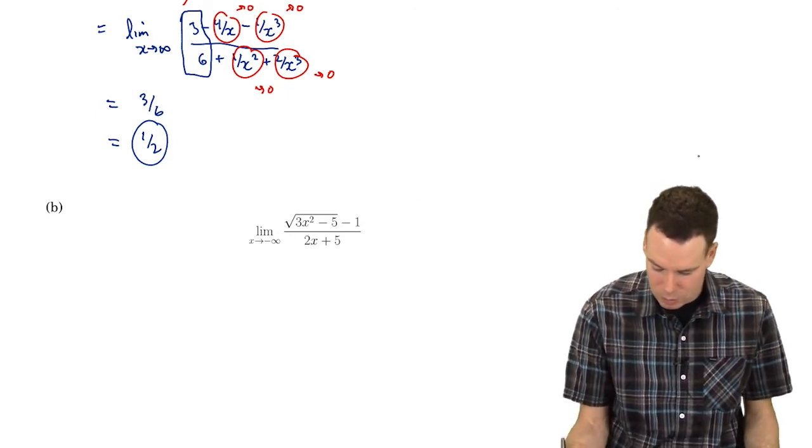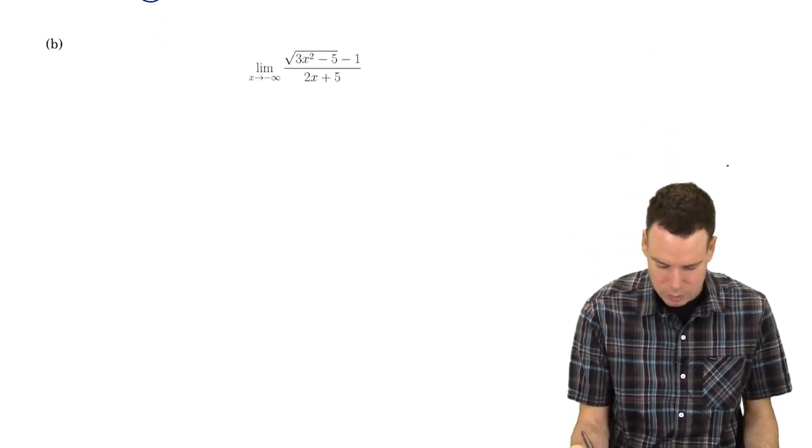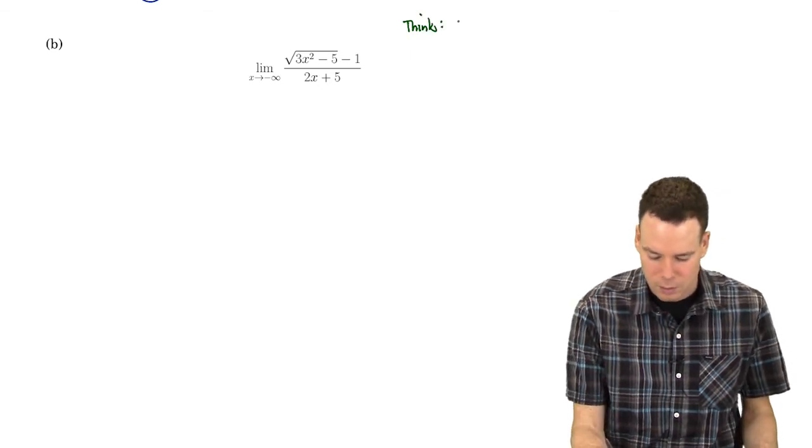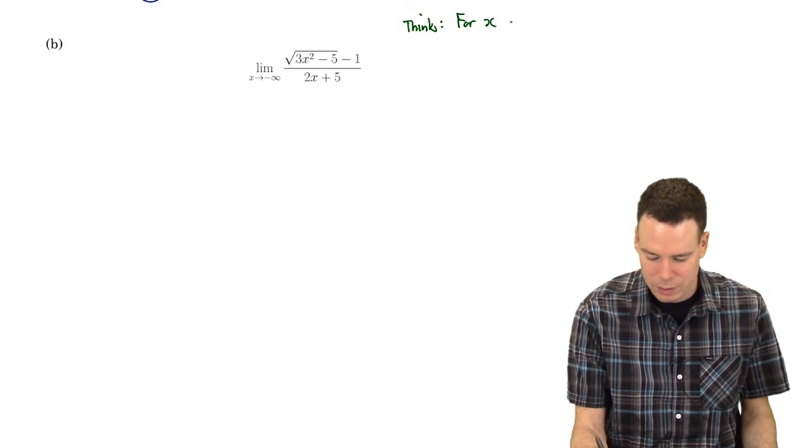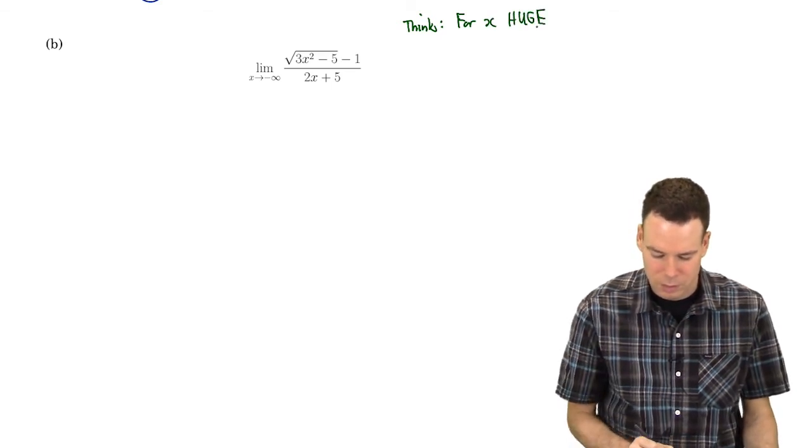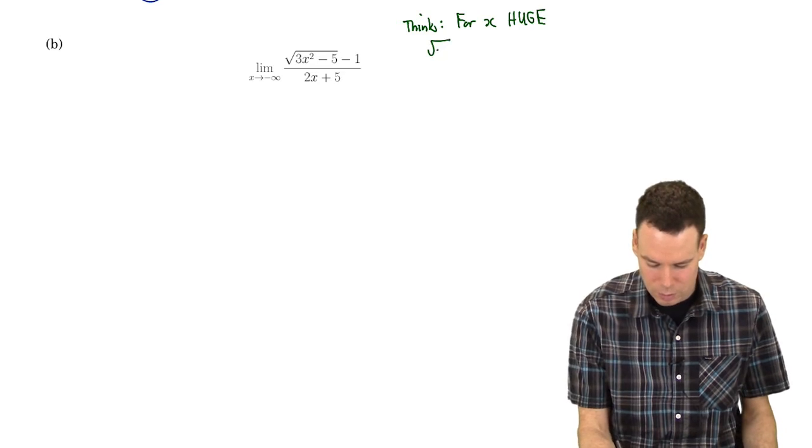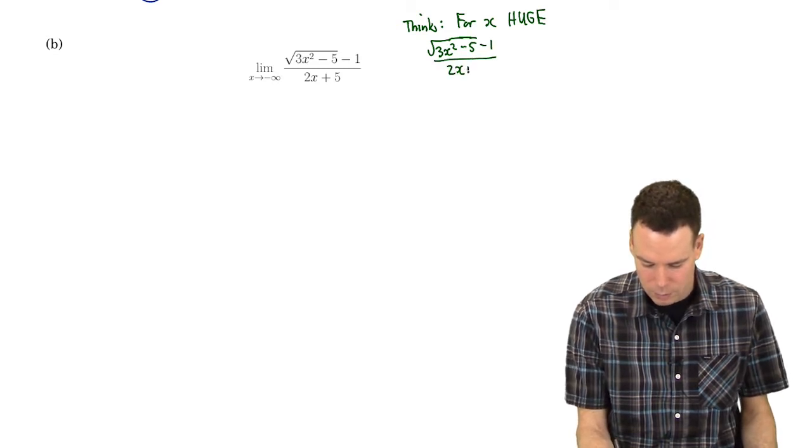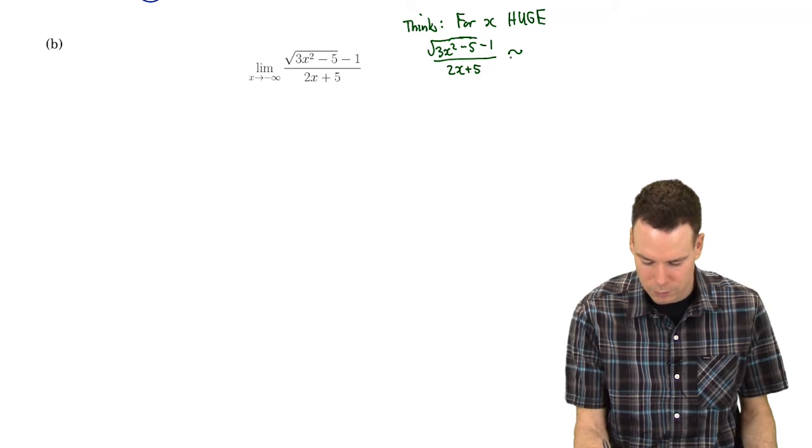So again I'm going to do a bit of thinking first and here my thoughts are what happens when x is huge? What is going on when x is huge? When x is huge that thing in the numerator and that thing in the denominator are roughly what?